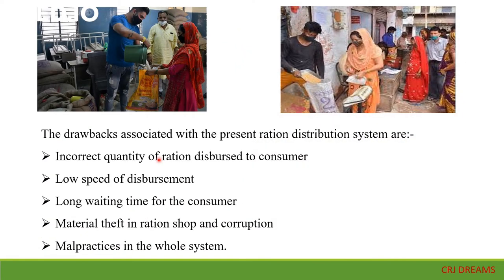The present system uses manual methods for distributing commodities like sugar, rice, and wheat. There have been many complaints about shopkeepers not providing adequate amounts of food grants to people. The drawbacks of the current ration distribution system include incorrect quantities dispersed, slow speed of disbursement, long waiting times, material theft in ration shops, and corruption and malpractices in the whole system. By using the smart ration system, we can put a full stop to these problems and supply ration to people on time without any issues.